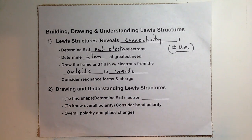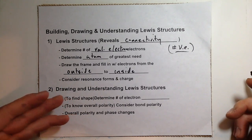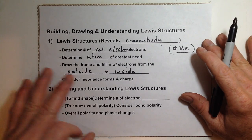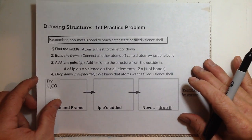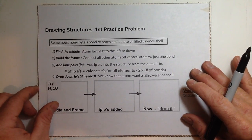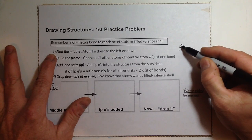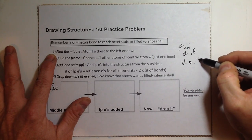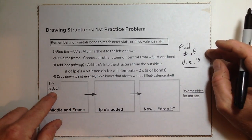We said we'd make three videos where we build a Lewis structure, shape a Lewis structure, and then look at the overall polarity and phase behavior. But I think I need to shrink this into four videos. The next one — this video — is just going to be five practice problems where we build a valid Lewis structure. The number of valence electrons is the first task we have to do for any molecular formula given.